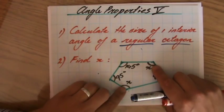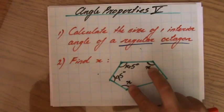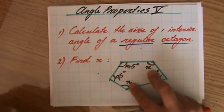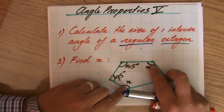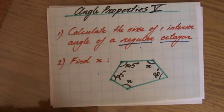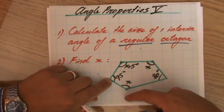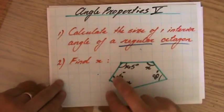Okay, find x. So, the value of x, and I see some angles here, and two angles are unknown, they're both x, so that means they are equal anyway. Now, let's have a look at the type of polygon. How many sides does it have? One, two, three, four, five sides, so it's a pentagon.